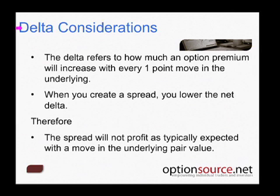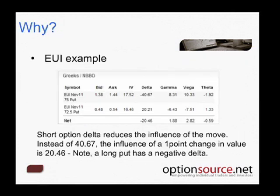What we also have to consider is the delta of the net position. The delta of the option contract refers to how much an option premium will increase with every one-point move in the underlying security. So when we create a spread, we actually lower the net delta as well, meaning the spread will not profit as typically expected with the move in the underlying pair value.